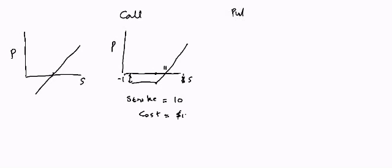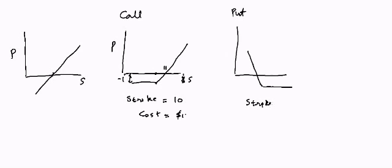The same logic applies to a put option. A put option is the option to sell the stock at a particular price. In this case, you make money when the stock price goes down, but you lose the premium you paid to buy the put. With a strike of $10 and a cost of $1, your maximum loss is $1, and you start making money when the price reaches $9.